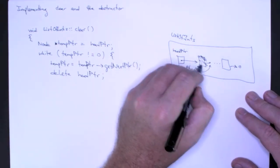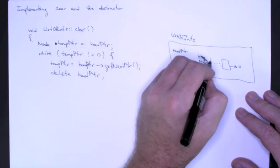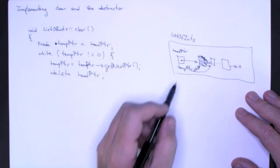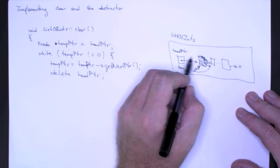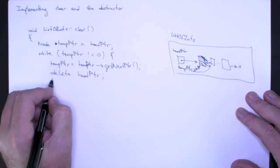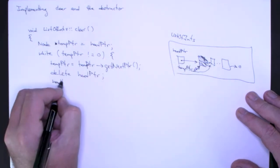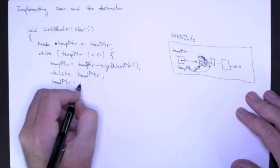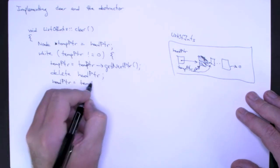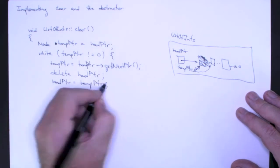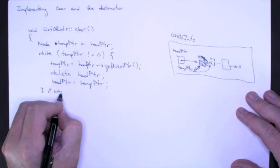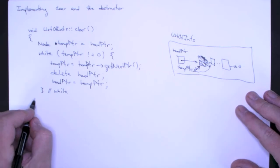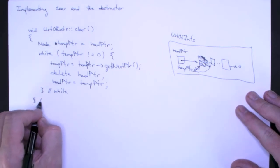So that deletes this element. Then to make sure that I'm in exactly the same configuration as before, I have to make head pointer point to temp pointer. Just like that. And that's the end of the while loop. And that's also the end of my clear method.